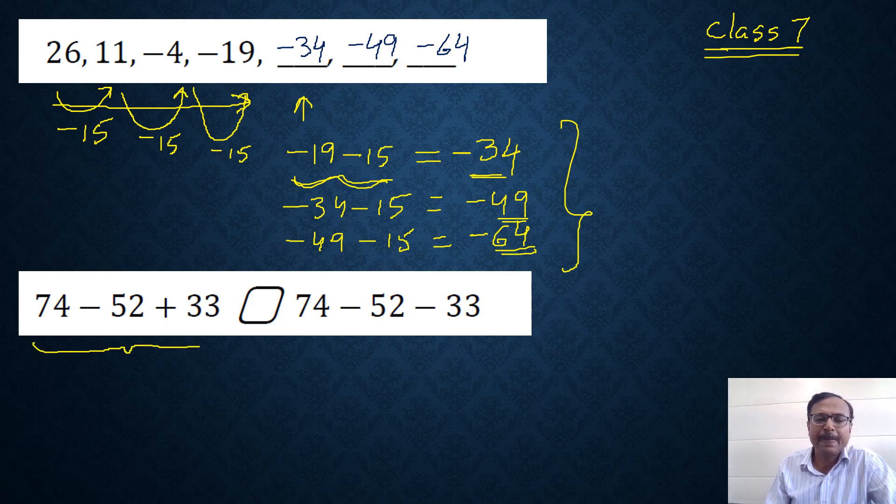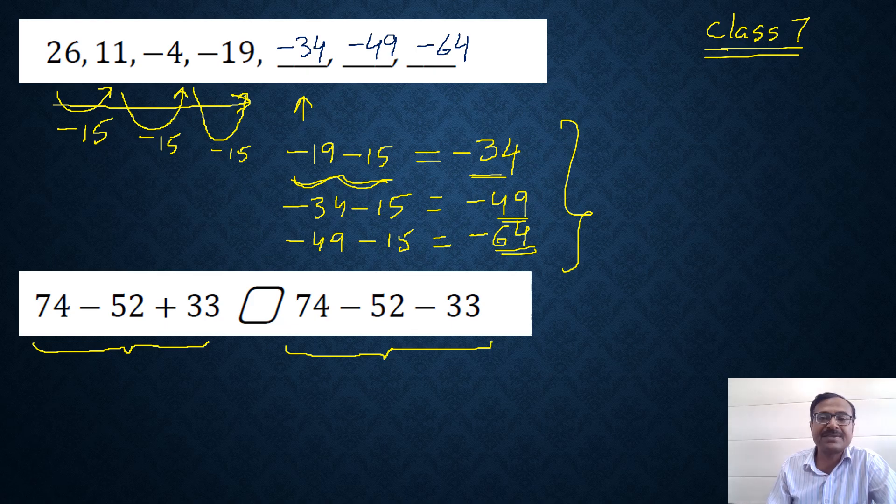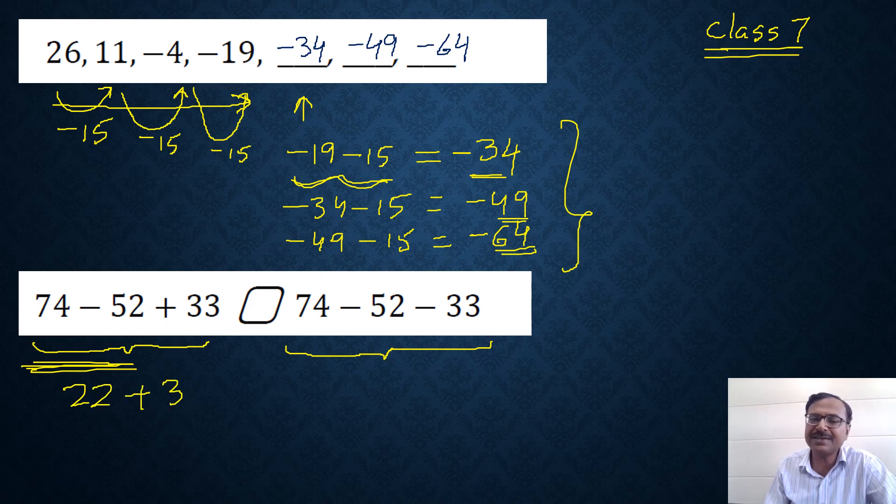We have a left hand side and a right hand side. We have to check which one is greater or whether they are equal. If you simplify the left side, 74 minus 52, that's pretty obvious, 22, and then plus 33 is 55. So on the left hand side we have 55.